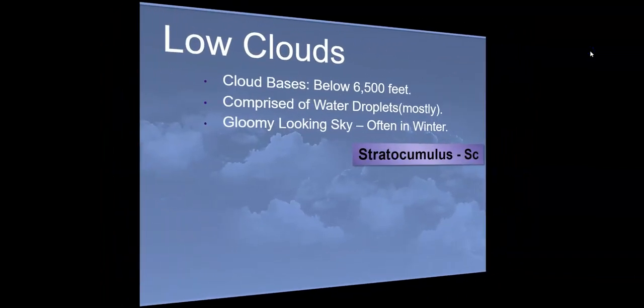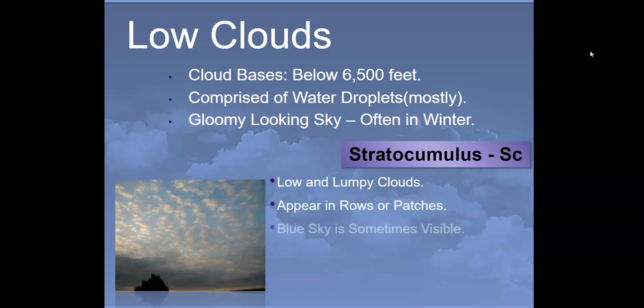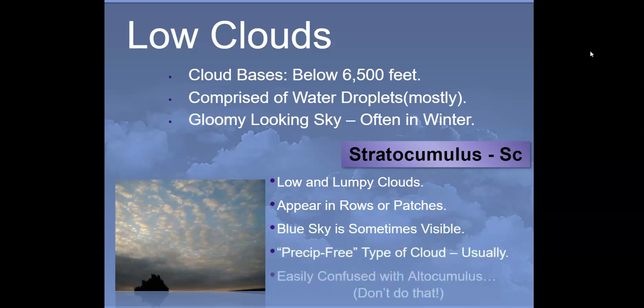Low clouds have bases below 6,500 feet and are comprised mostly of water droplets. These are responsible for gloomy-looking skies, especially in wintertime. The first type is stratocumulus — low, lumpy clouds that appear in rows or patches, with blue sky sometimes visible between those patches. These are generally precipitation-free clouds. They can be confused with altocumulus, but the difference lies in where those bases are.